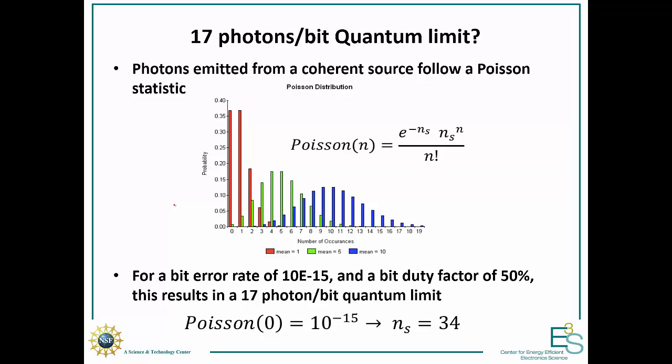Now, what's the limit in terms of photons per bit we can use? Well, there's something called the quantum limit, and that's 17 photons per bit. But what exactly is the quantum limit?